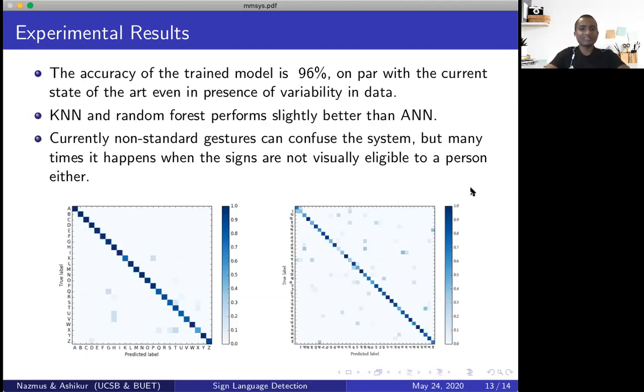So currently, there are some non-standard gestures which can confuse the system. However, we've noticed that that happens most of the time when the gesture is not really intelligible to the naked eye either. And from the confusion matrices for both ASL on the left and BDSL on the right, you can see that our performance is pretty good.